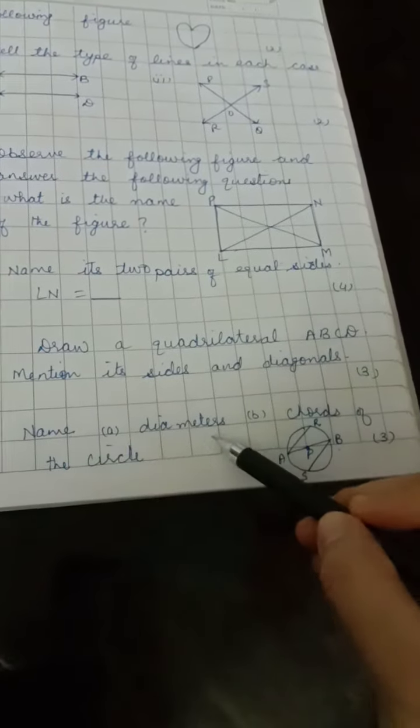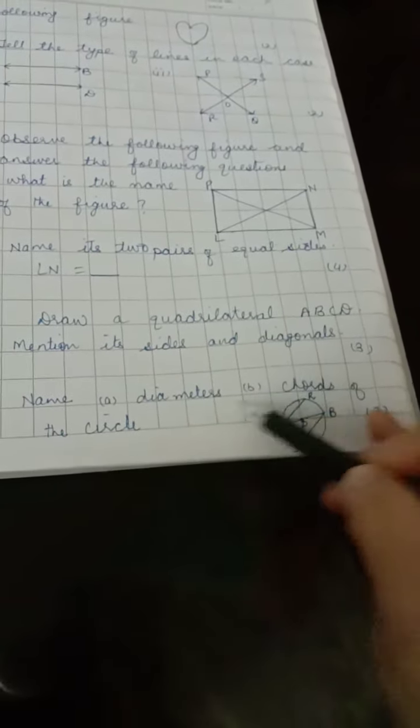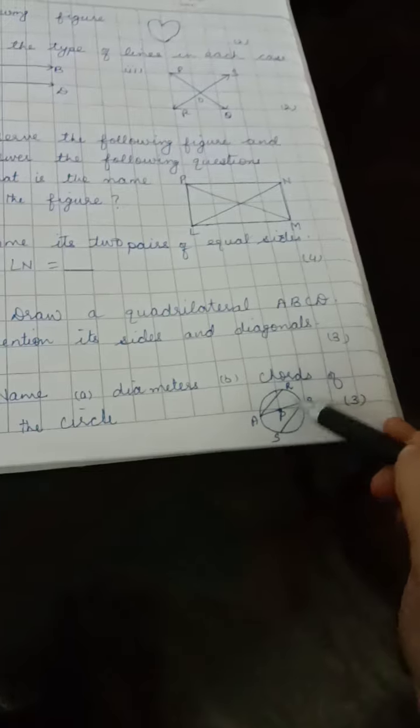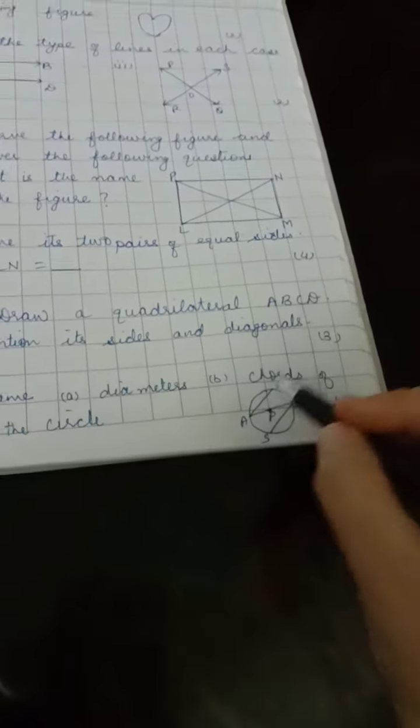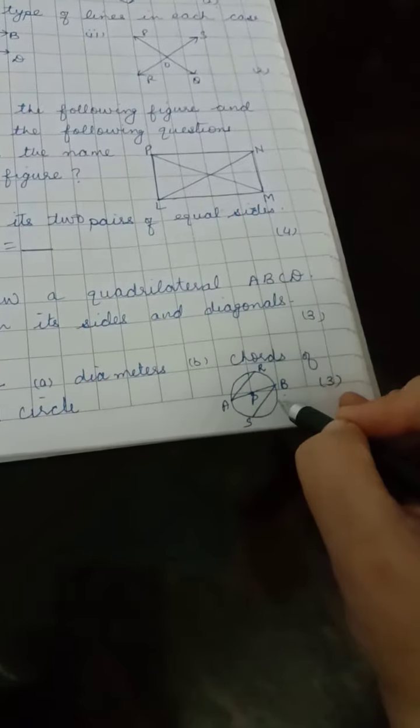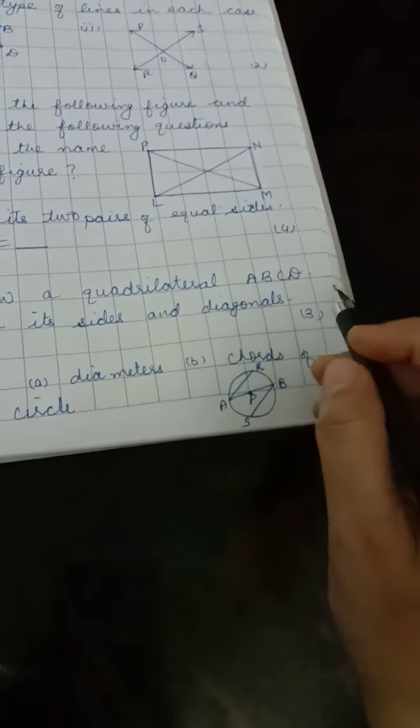Question number 5: Name the diameters and chords of the circle. Following figure is given. You have to write the diameter, name of the diameter and chords.